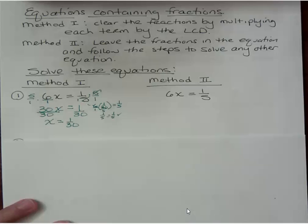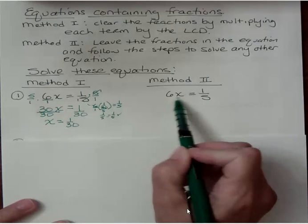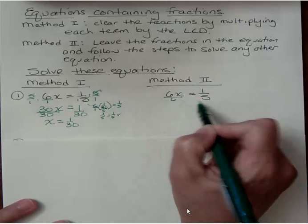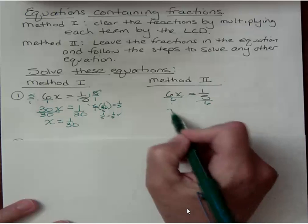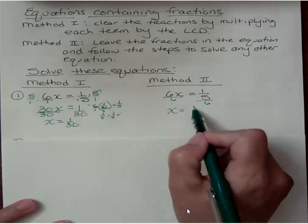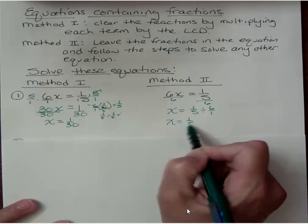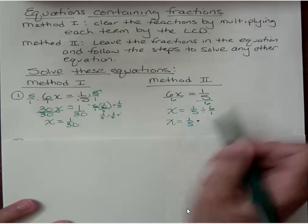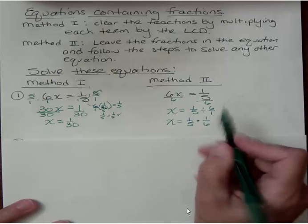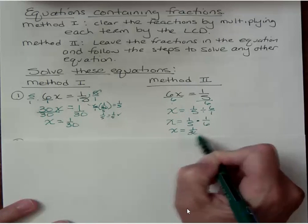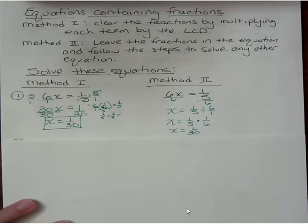In method two we just leave the fractions in and work it like we would any other equation. Any other equation if we had this we would just say okay I don't have to move any constant terms around all I need to do is get rid of the coefficient so I'm going to divide both sides by the coefficient. The six is cancelled here and I just get x. Well what do I have over here? I have a one-fifth divided by six over one and if I divide by a fraction I flip that to find the reciprocal and change it to multiplication so I get one over six and what is one-fifth times one-sixth? Well it's one-thirtieth which is exactly what I got with the method number one. Method number two is working the same. What you're going to have to do with method number two is deal with more fraction operations. That's the real difference.